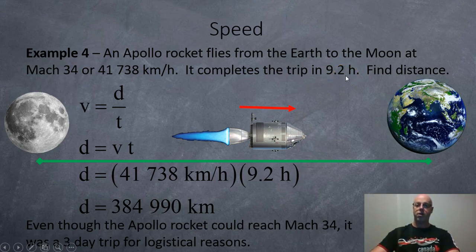Okay. If they go straight, which is pretty dangerous, find the distance. So, speed is distance over time. And so, if you rearrange the equation, bring the t up, you get vt. Flip the equation over. Distance is speed times time. So, we're going to get 41,738 kilometers per hour times 9.2 hours. So, the distance to the Moon is 384,998 kilometers.